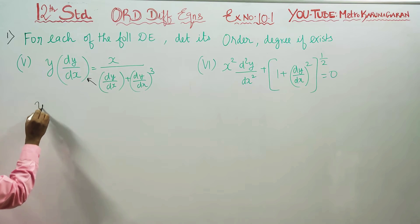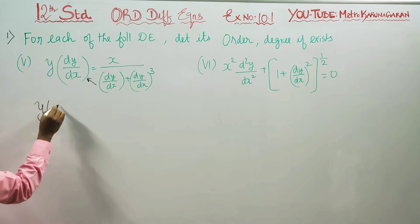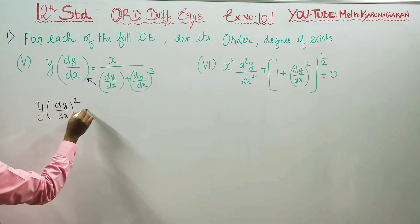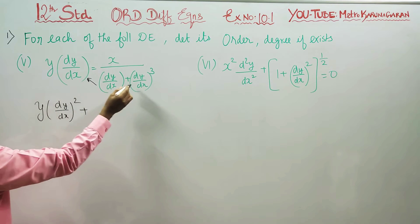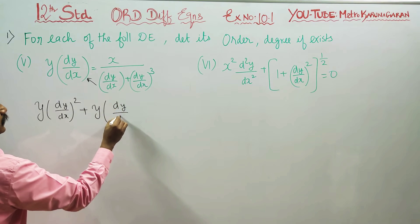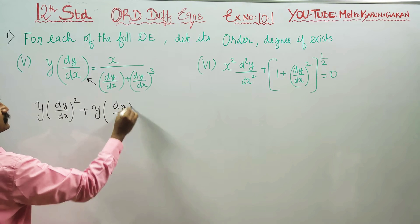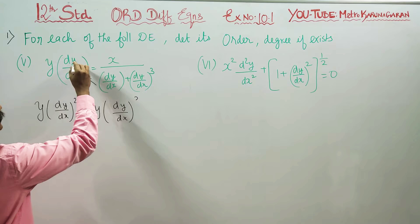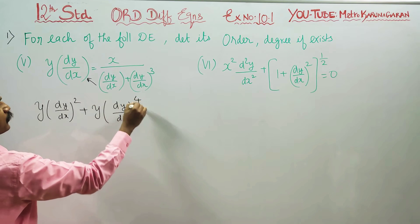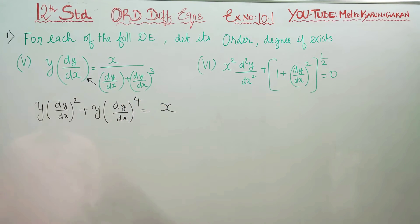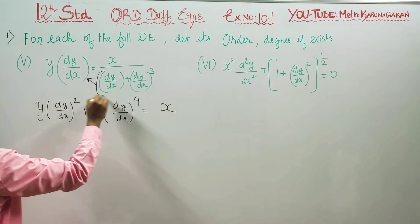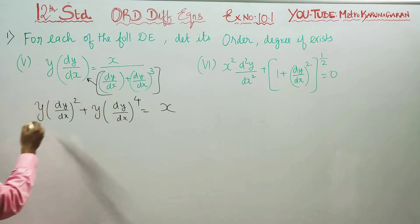This into this is y(dy/dx) whole square. y into (dy/dx) whole power 4. I have (dy/dx) all power 4 is equal to x. This is fully cross-multiplied.